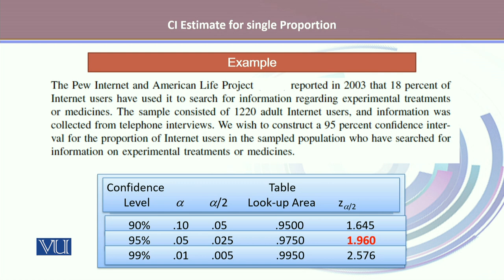Since we are using a 95% confidence interval, we obtain the reliability factor from the standard normal distribution. Looking up 0.9750 in the z-table, the value of z(α/2) for a 95% confidence level is 1.96.